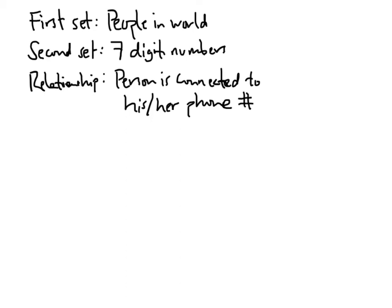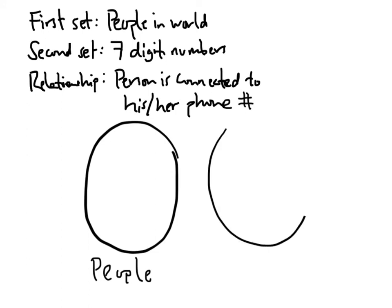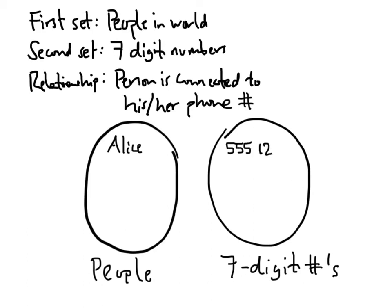We're going to draw two bubbles to understand this relationship. The first bubble represents people and the second bubble represents our seven-digit numbers. Let's say our friend Alice — her home phone number happens to be 555-1234. That's Alice's phone number, so we draw an arrow from Alice to that phone number.